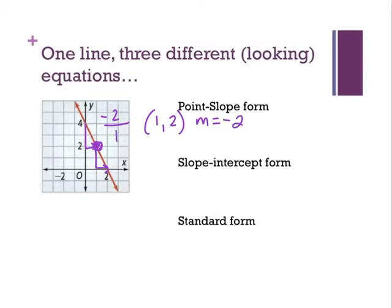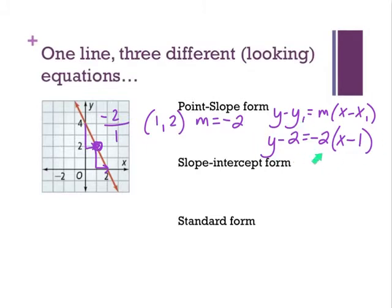To write point slope form, I'm going to take that template, and my suggestion to you as you practice with these is to write the formula down before you start. It's y minus, and y1 is the y coordinate of my point that I'm using. So y minus two equals negative two for m times the quantity x minus, and it's the x coordinate I'm using for the point that I have. And there you have point slope form. Now, take point slope form, that first one we just wrote, and I can write slope intercept form.